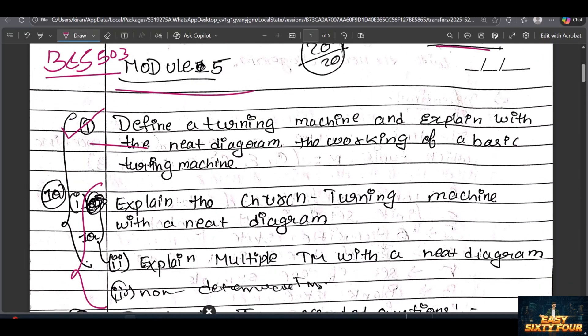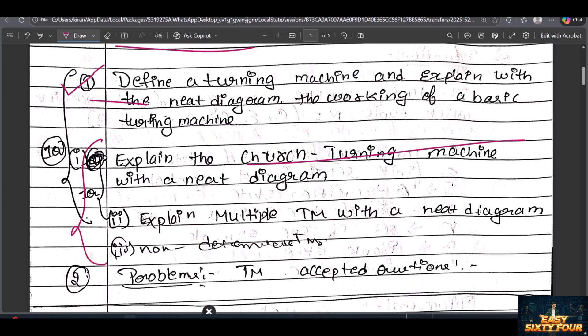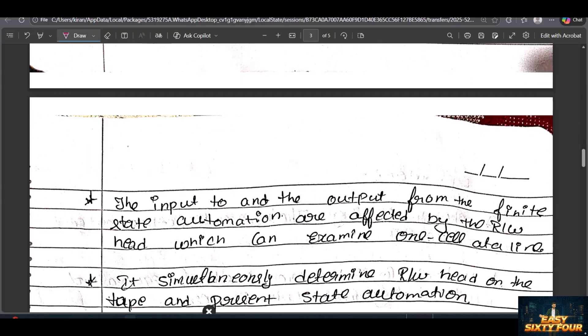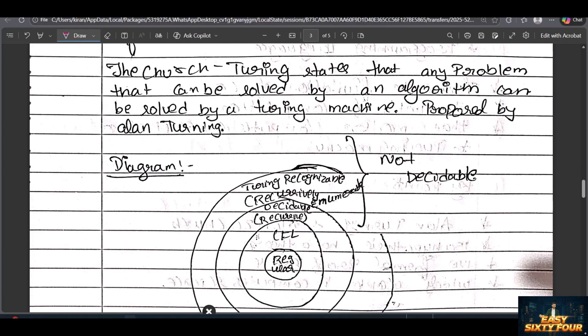This is the most important question. You can expect this in the exam 100 percent. After that, explain the Church-Turing thesis. This is also a very important but easiest question.